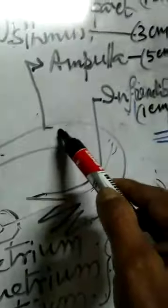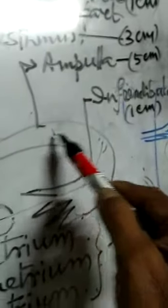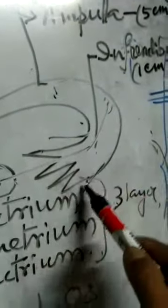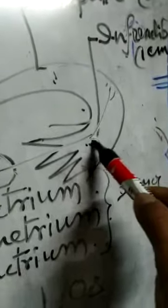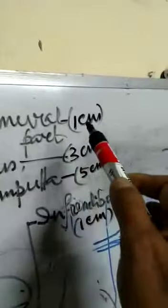Next is the uterine tube. The uterine tube starts from the lateral end of the uterus — that is the intramural part — then the isthmus, then the dilated portion known as the ampulla, then the most dilated funnel-shaped portion known as the infundibulum, then the finger-like processes known as the fimbria. This is the ovary. The intramural part of the uterine tube is 1 centimeter, and the constricted portion, the isthmus, is also noted.